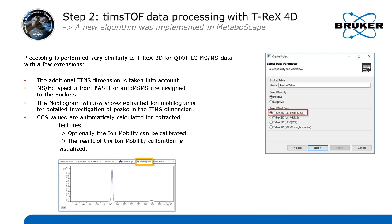For TIMSTOF data, this is completely integrated in MetaboScape by the TREX 4D algorithm. You can easily detect isomers, get cleaner MS/MS spectra through ion mobility separation of precursor ions, and obtain a collision cross-section (CCS) value for all your analytes. CCS values are a property of the ions of your compound — they are independent of any chromatography — so they can be used as an additional qualifier for annotation. You can also see mobilograms for all your compounds and easily observe how each compound behaves in the mobility dimension.